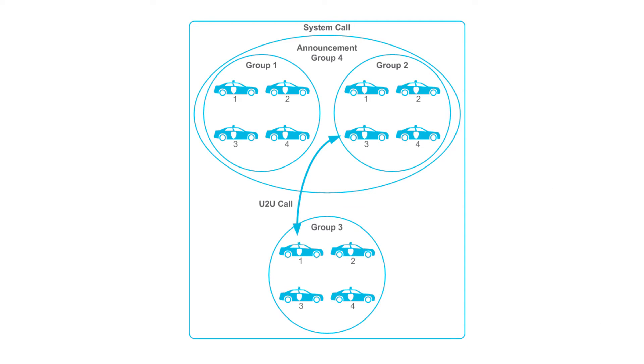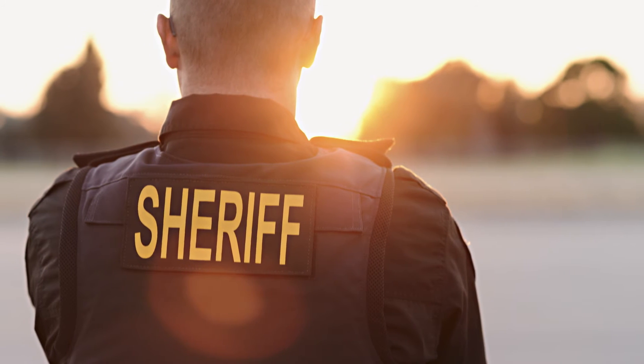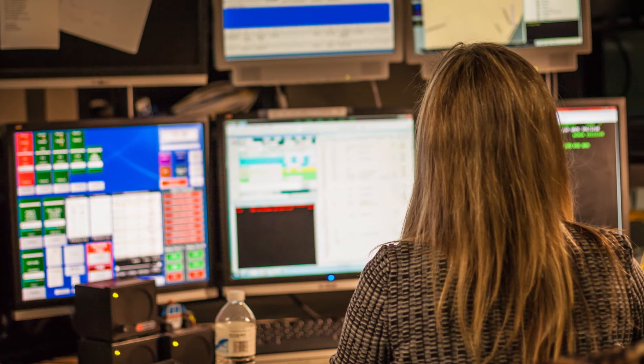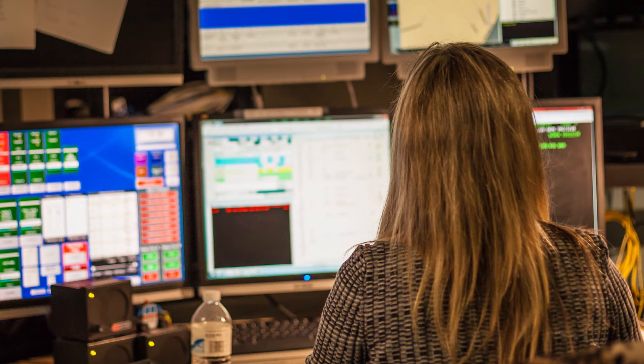Talk group calls, which is a one-to-many call, as well as unit-to-unit calls are supported in trunking. There's also announcement group calls, which is a call to a large group of groups on the network. Some trunk systems also support dynamic regrouping, where teams of people can be allocated dynamically from the dispatch centre as new incidents occur, rather than having to be pre-programmed in the radio. There's also emergency calls, where in an emergency situation you can be given priority access to the system, which allows you to pre-empt channels that are already in use.